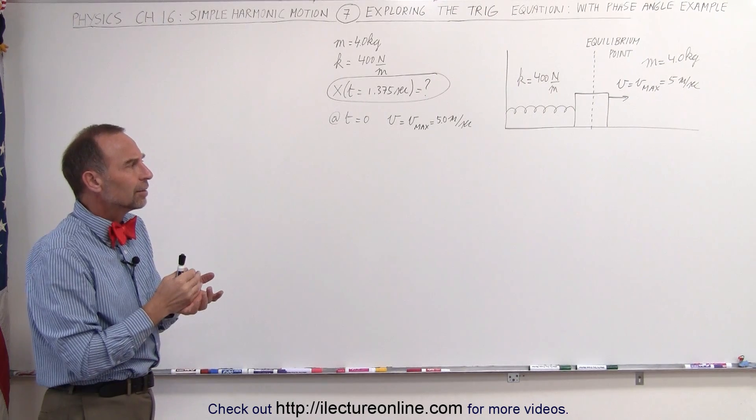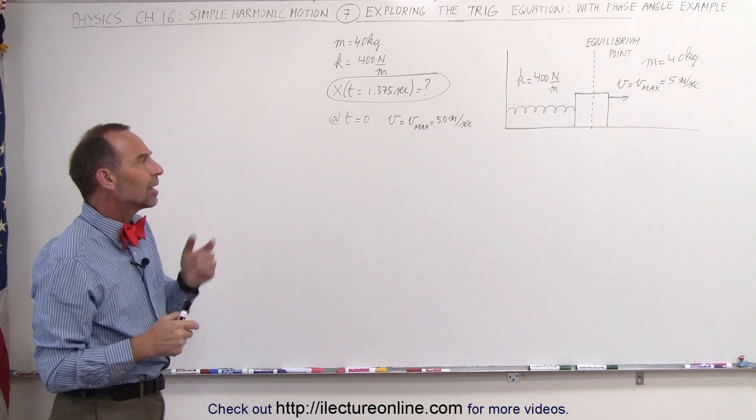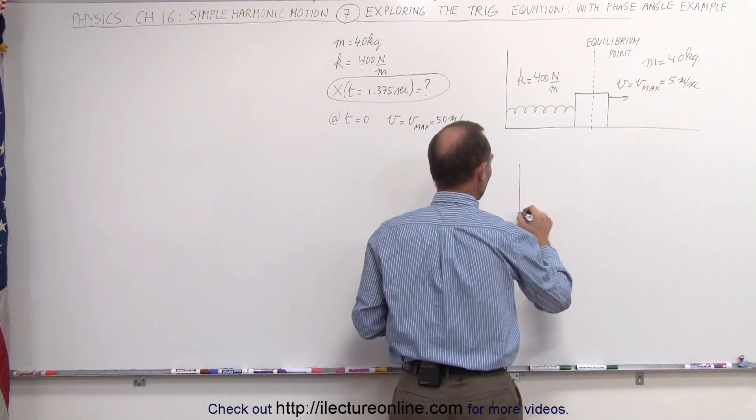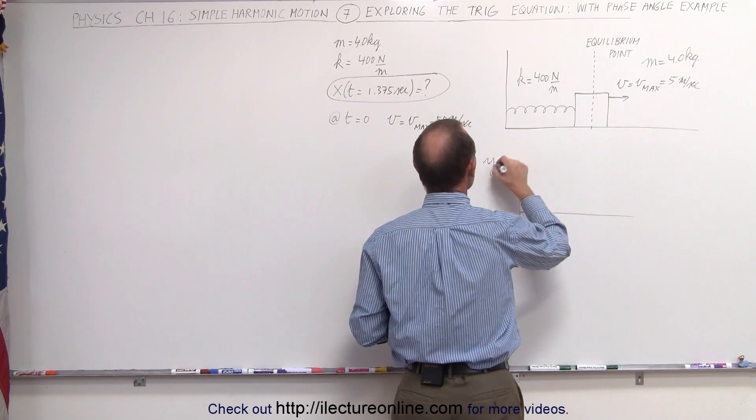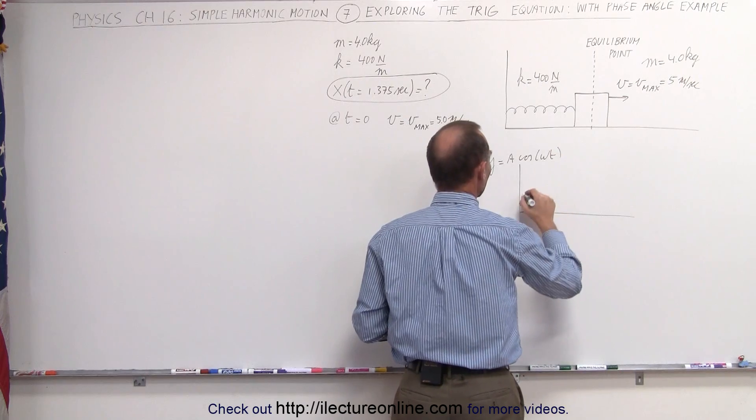That means that it should be shifted by a certain amount. If we draw the function y equals a times the cosine of omega t, it looks like this.